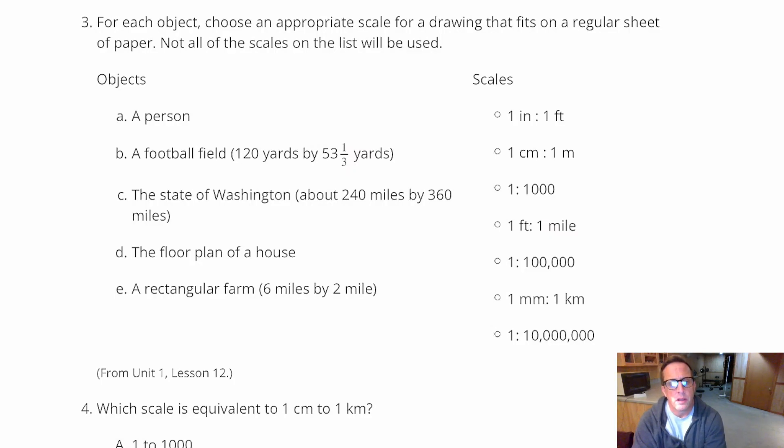So for A, a person. I think it's already lined up with it. I don't think that's true for all of them. But I would, I think for sure, right here, a person, yeah, one inch is equal to one foot. Most people, average height is like five foot ten. Tall people are over six feet. Really, really tall people are over seven feet. So that still would be seven inches, even if you have a really, really tall person. So that would fit on a piece of paper nicely. So we're done with A.